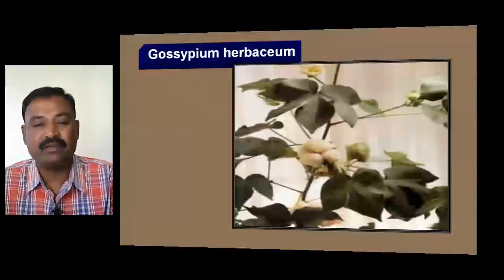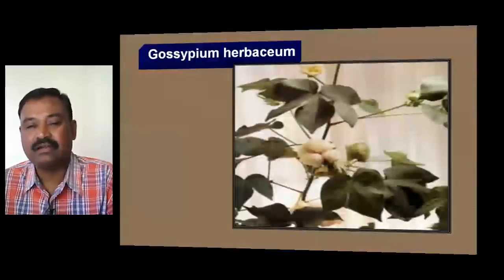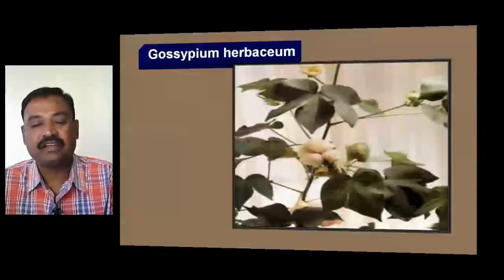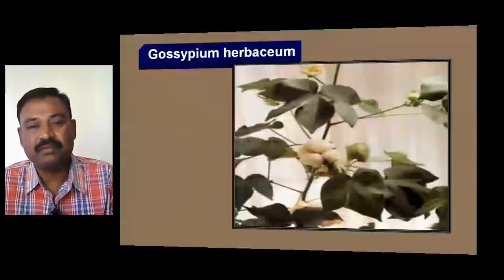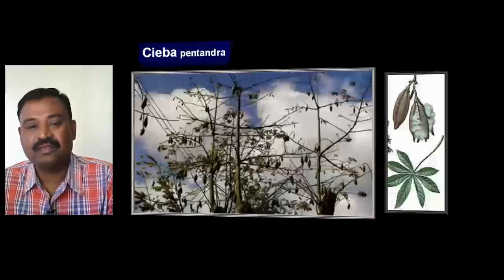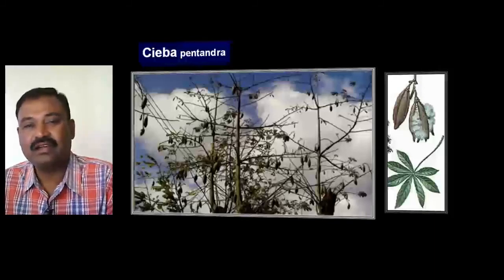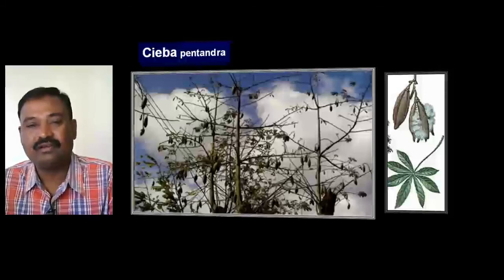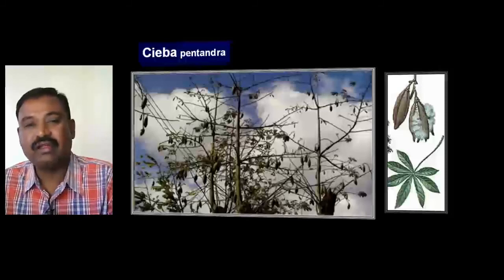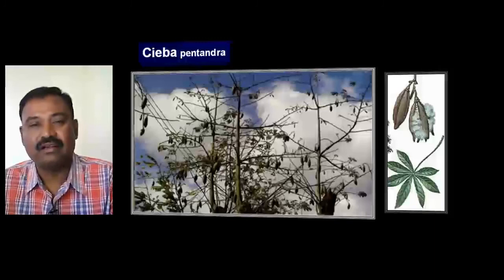Gossypium herbaceum — common name is cotton plant — is a cotton-yielding plant of Malvaceae. Oil is also extracted from the seeds of Gossypium herbaceum. Ceiba pentandra — common name is silk cotton tree. From the roots of Ceiba pentandra, silk cotton is available, and it is used for making beds and pillows.